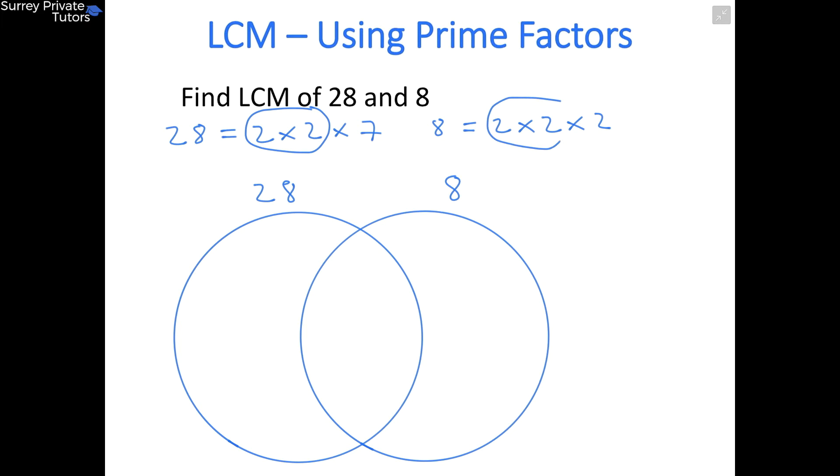You can see they both got a 2 × 2, so we can put these in the middle. 28 also has a 7, so you can put that on the left-hand side. And 8 has got an extra 2, so you can put that on the right-hand side.